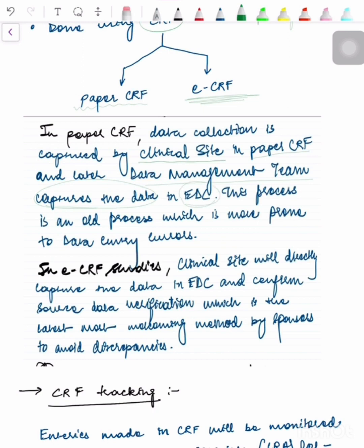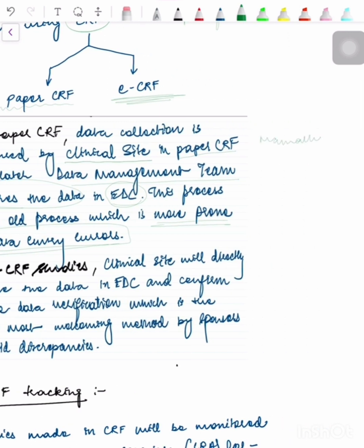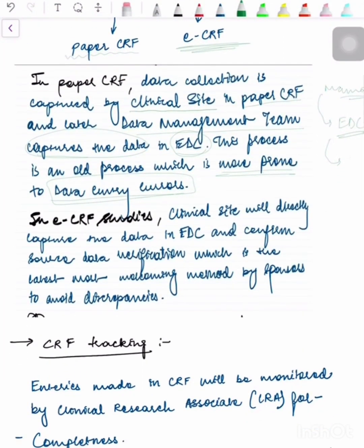This process is an old process and is more prone to data entry errors. When you're writing something, there are more chances for error. Firstly, because you are entering the data manually in paper format, and second, when this data is to be transcribed into electronic form, it might be due to illegibility or lack of knowledge that it gets wrongly translated or transcribed. So paper CRF is more prone to data entry errors.